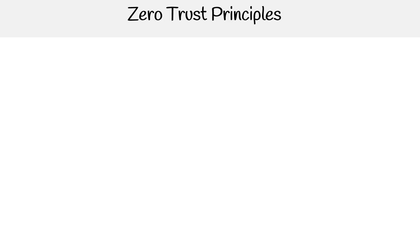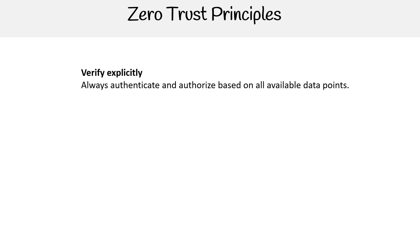Let's go into more detail on the three principles. The first principle is verify explicitly. This means always authenticating and authorizing based on all available data points, including user identity, location, device, service or workload, data classification, and anomalies.